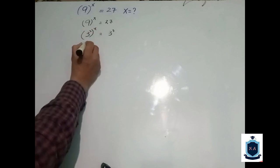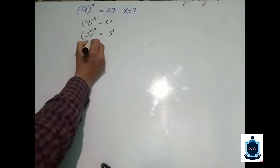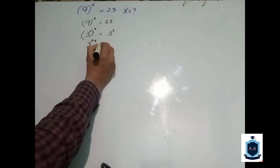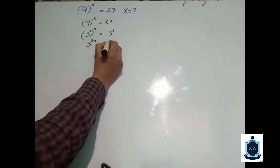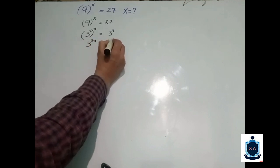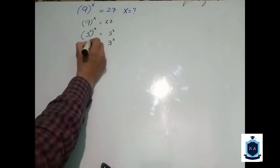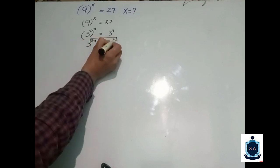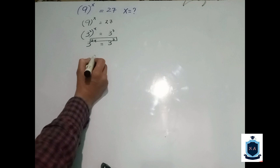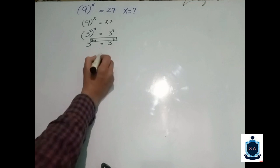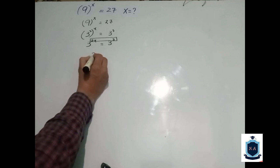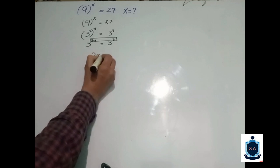Then power power is multiply each other, so 3 power is 2x equal to 3 power is 3. Then in this regard we will compare the power of both side variables. Since the bases are the same, we compare the powers: simply 2x equal to 3.